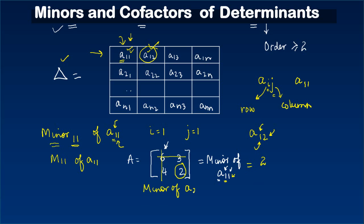If you had to find the minor of a₂₁ — second row, first column — that element is 4. I eliminate the second row and the first column, and what is left behind gives the minor. This procedure works for a matrix of order two.